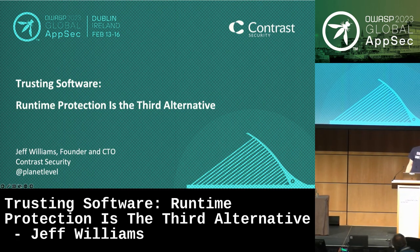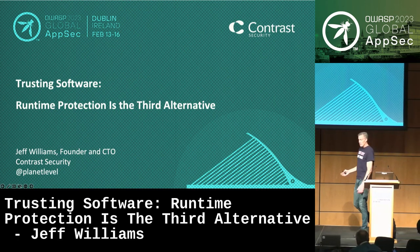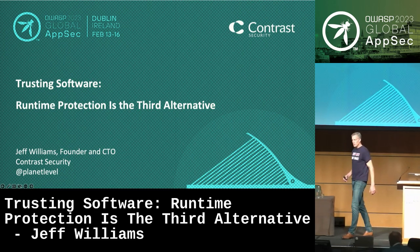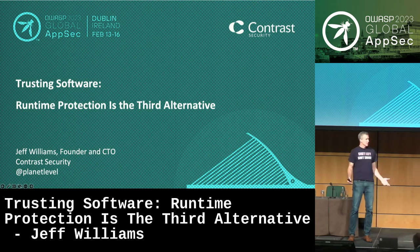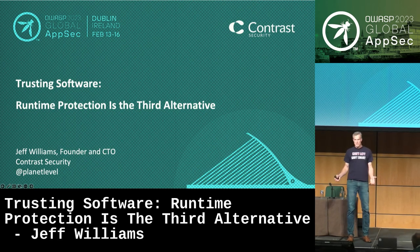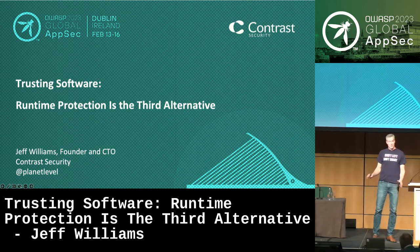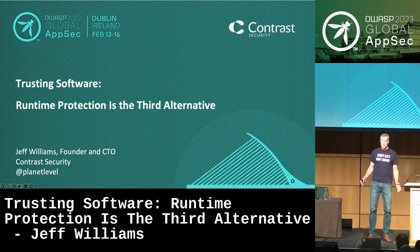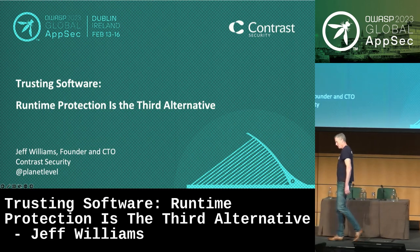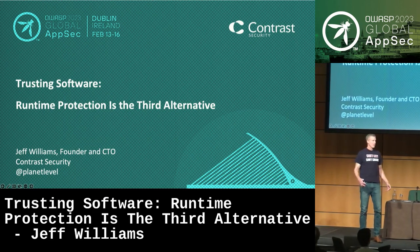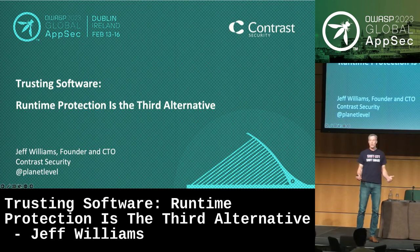Unfortunately, we're not very good at writing software securely. My name is Jeff Williams. I've been in software security for a little over 25 years. I helped to start OWASP. You may have used some of my projects like WebGoat, the OWASP Top 10, ASVS, ISAPI, and a number of others. But none of that worked. We are still in pretty dire straits in terms of our ability to write secure code, so I am actively trying to push the envelope and figure out something that will work.